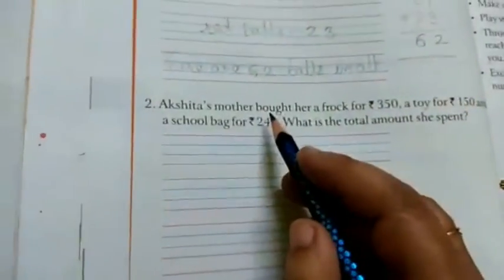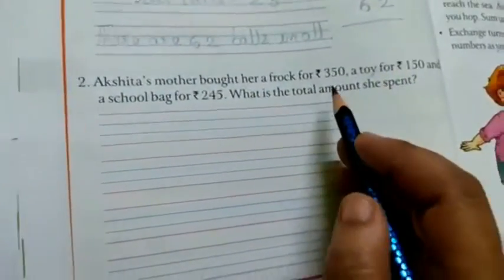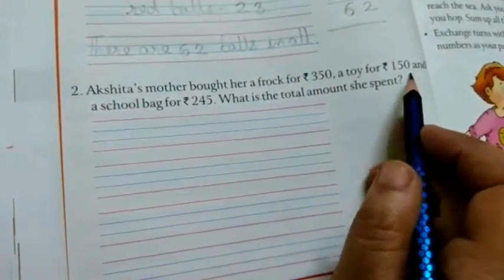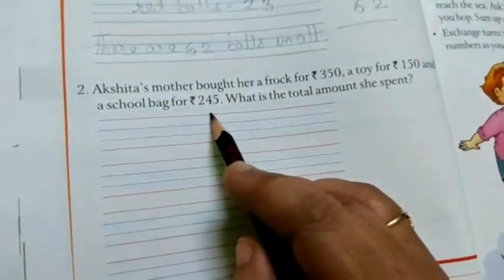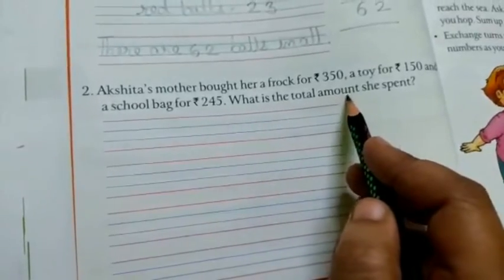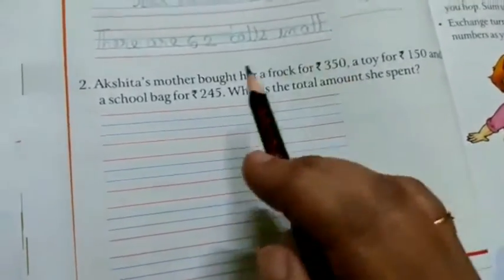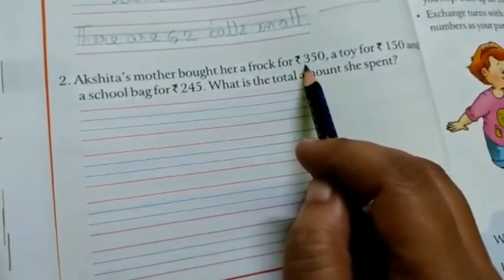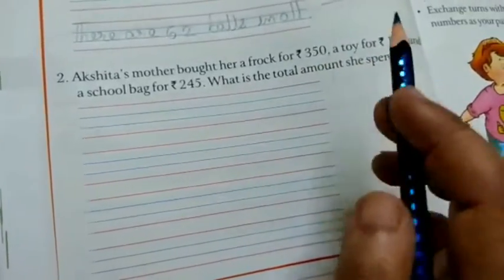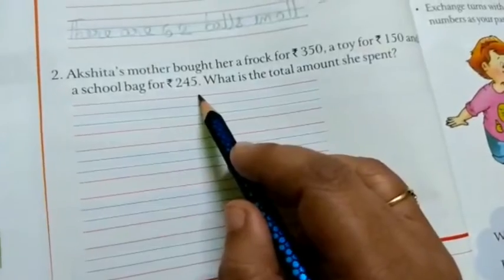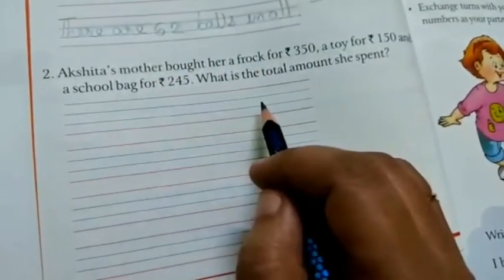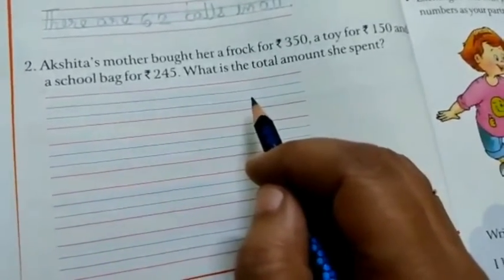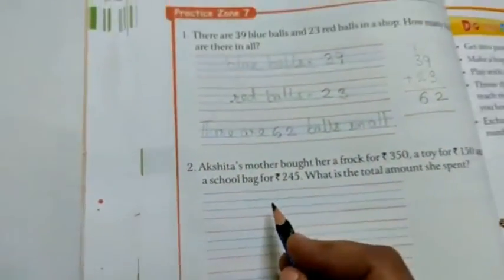Then Akshita's mother bought her a frock for rupees 350, a toy for rupees 150, and a school bag for rupees 245. What is the total amount she spent? So Akshita's mother bought a frock for 350, a toy 150, and a school bag for rupees 245. So how much amount did she spend? For the total amount, what will be your statement?